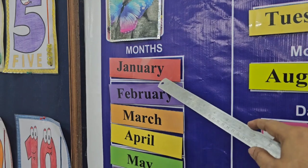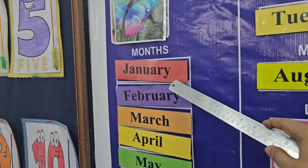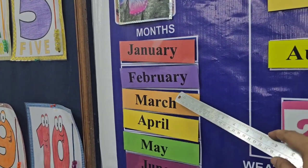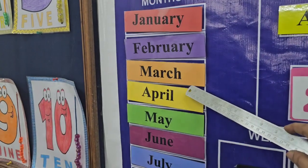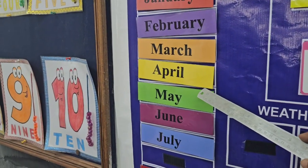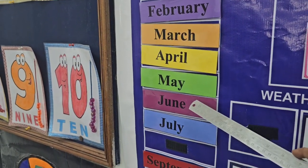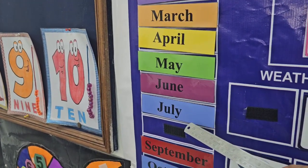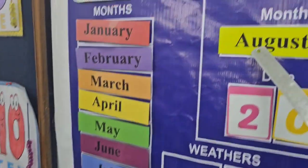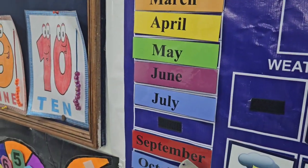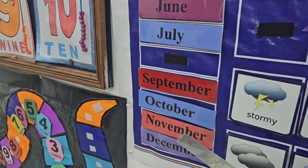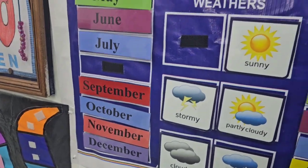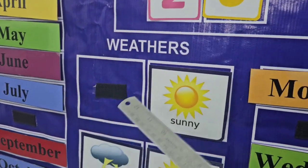How many months are in a year? There are 12 months: January, February, March, April, May, June, July, August, September, October, November, December.